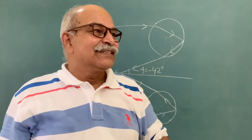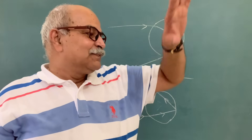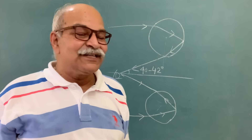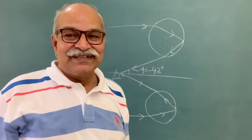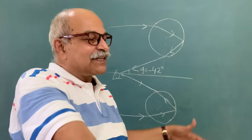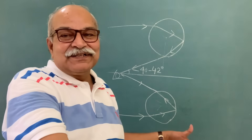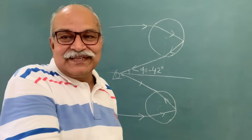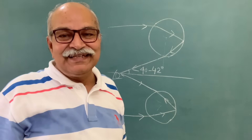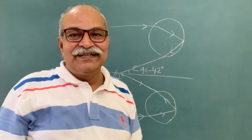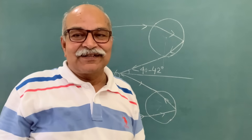Since we are not able to see the full circle — because we are generally on the ground — only the part of the circle above the ground is visible, and that is why we always see a circular arc.